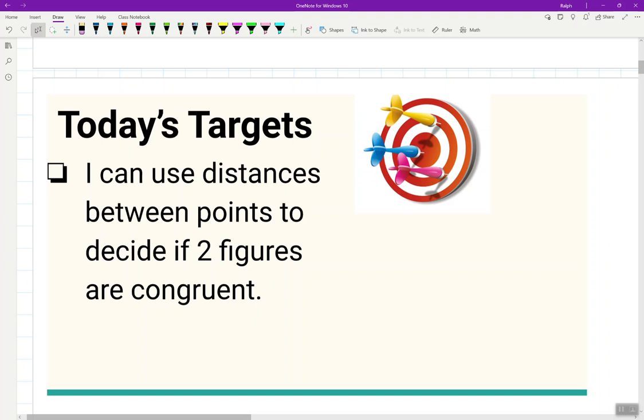So today's target: I can use distances between two points to decide if two figures are congruent. We're going to look at distances between two points. This probably gives you a little hint. We're going to continue to look at lengths, but it might not necessarily just be lengths on the outside corresponding sides. There could be other corresponding parts.